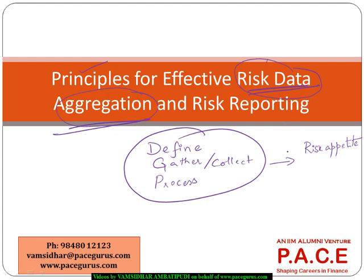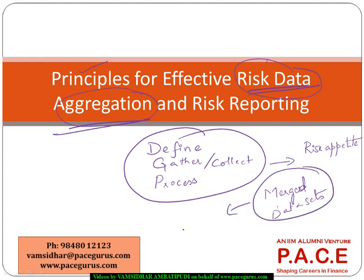This needs to be the entire objective of any good risk data aggregation process. It can start from understanding what data needs to be collected and from what sources, how it should be merged, and what kind of data sets need to be created. Whatever processing happens should result in reports that are beneficial to understand and evaluate the risk-taking levels of the bank.